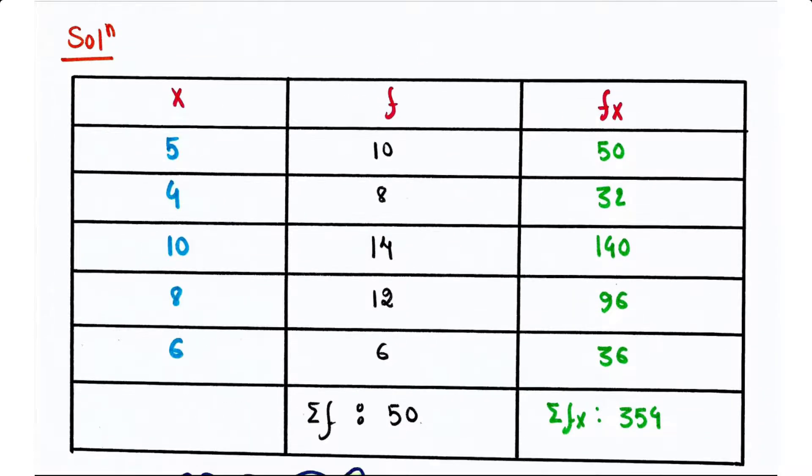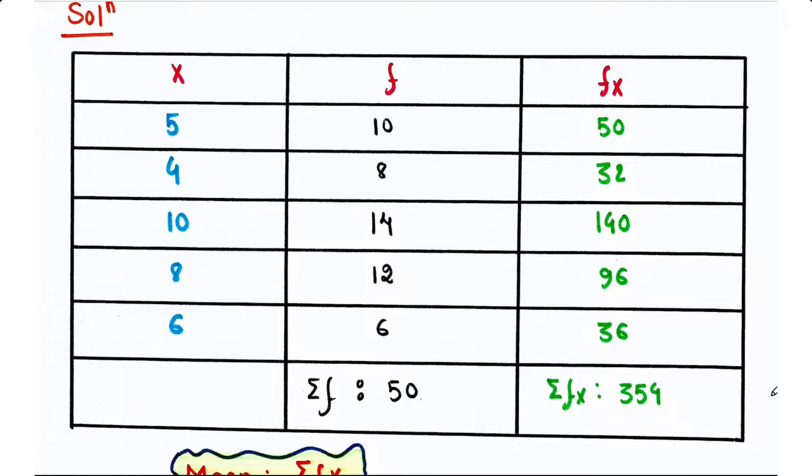So let's see the solution. First, for the given data, we can find the mean using this following method. So first we will calculate fx, like 5 into 10, that is 50; 4 into 8, that is 32, like that.